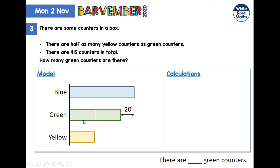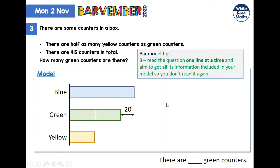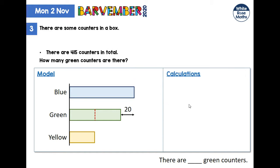Those are three equal parts there — that's useful to notice. One line at a time: is everything from that line in the model? Yes — let's get rid of it. There are 415 counters in total. 'In total' across all of them means a curly bracket across all bars — 415. Important to notice that the 415 does not include the 20; 415 is the blue, green, and yellow counters — just those three bars.